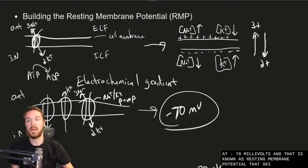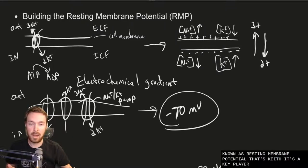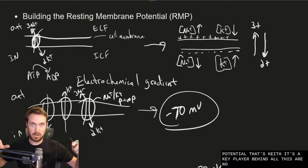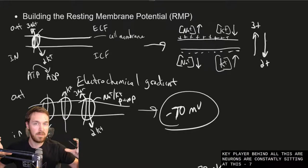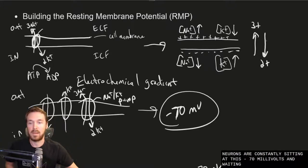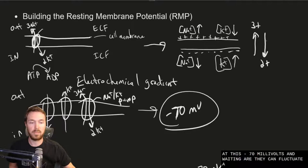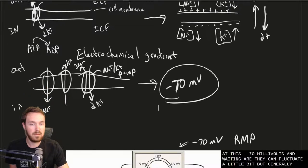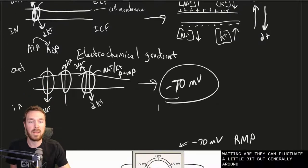That is the resting membrane potential — a key player behind all of this. Our neurons are constantly sitting at minus 70 millivolts and waiting. They can fluctuate a little bit, but generally remain around minus 70.